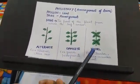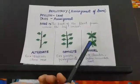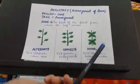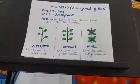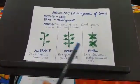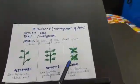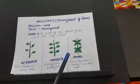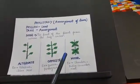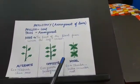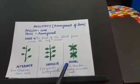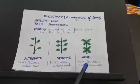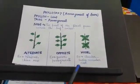Now, whorled arrangement of leaves. In this case, as we can see from the picture, it is very clear that from a single node more than two leaves are arising. If more than two leaves arise from a single node, they form a whorl and are arranged in a whorled type of arrangement. Examples are oleander and Indian cucumber.